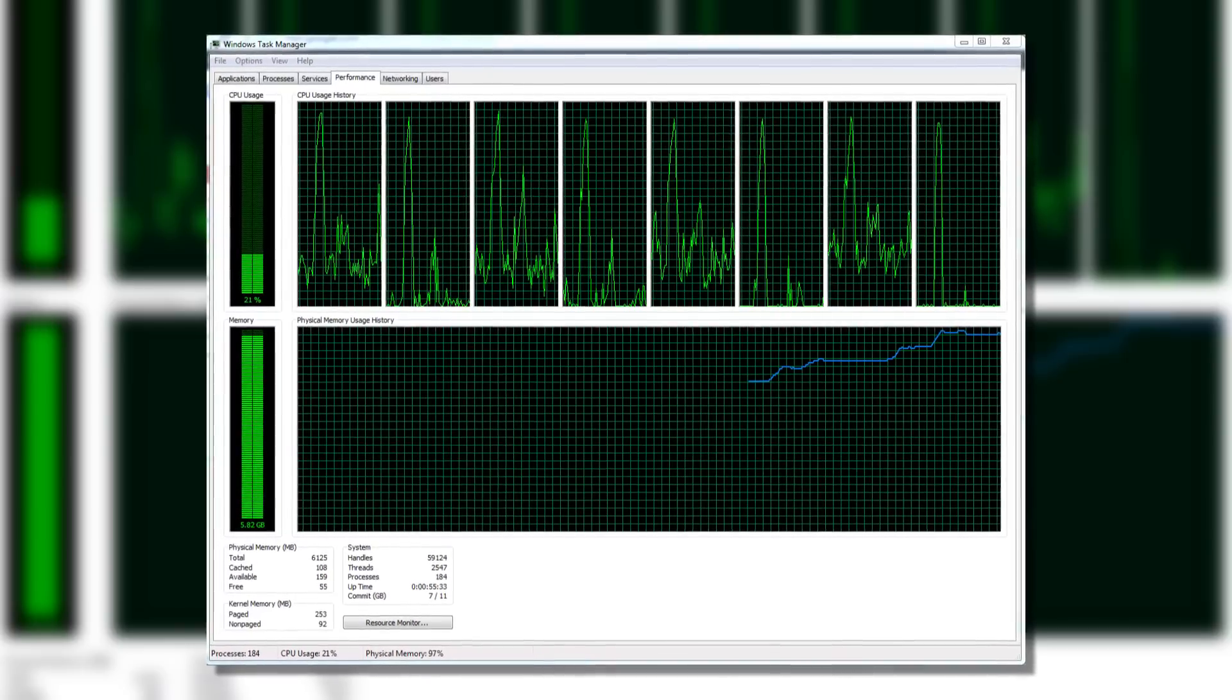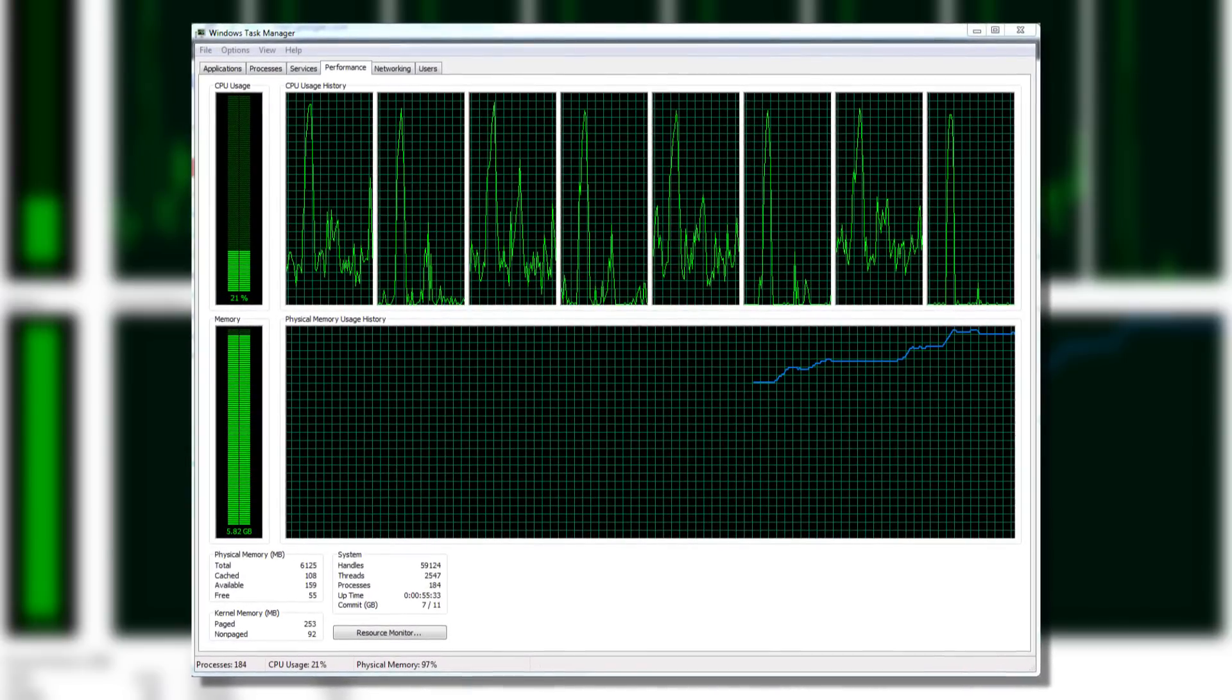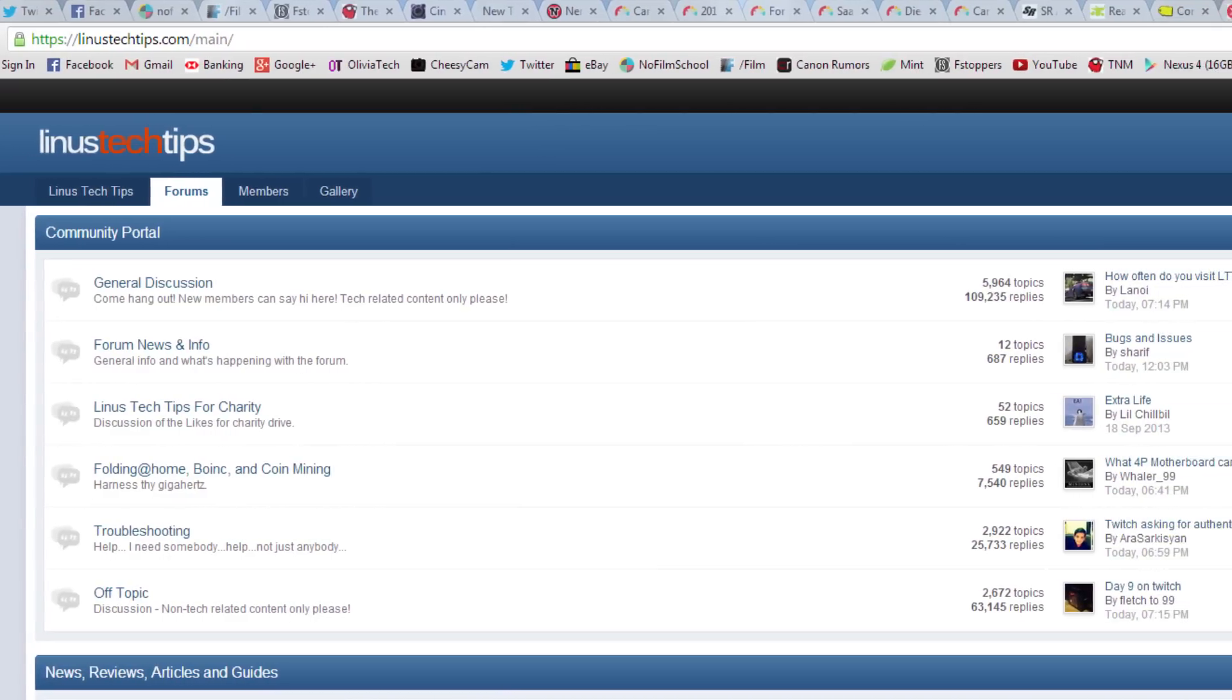Check out the Performance Monitor and Task Manager. In this example, we see that Linus's available RAM is very, very low. We can also check processes as a diagnostic tool, and we'll see that Linus has way too many Chrome tabs open.